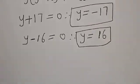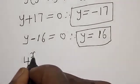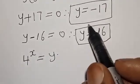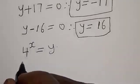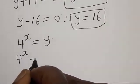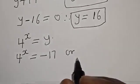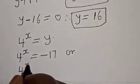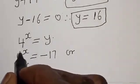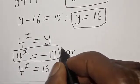Recall that 4 raised to power x is equal to y. So we substitute back: 4 raised to power x equals negative 17, or 4 raised to power x equals 16. But 4 raised to power x equals negative 17 is a false statement, because 4 raised to power x cannot take a negative value. So we reject this solution.